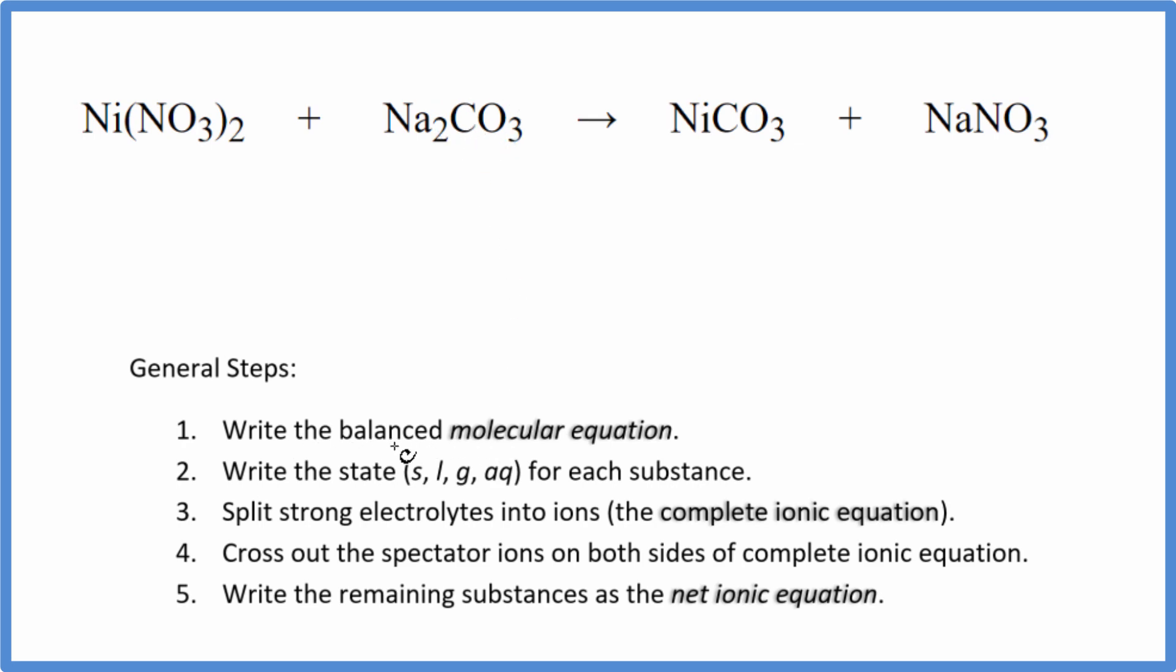First thing we do is balance the molecular equation. I can see I have two sodium atoms here and just one here. I'm going to put a two in front of the sodium nitrate. Now I have two sodium atoms and I have two nitrates, which is good because I have two here. I have one nickel on each side and one carbonate. So this is the balanced molecular equation.